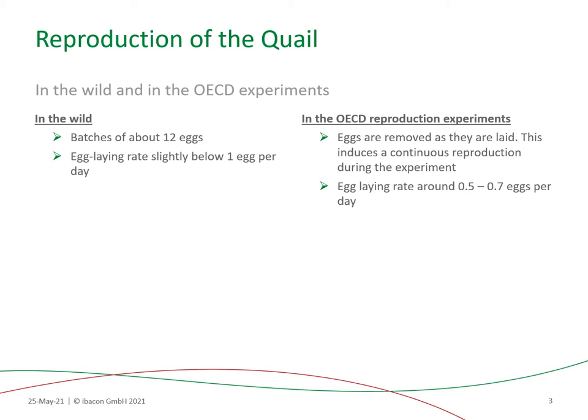In the wild, egg preparation and egg laying occurs as batches of about 12 eggs, at a rate slightly lower than one egg per day. In OECD experiments, however, the eggs are removed as they are laid, which induces a continuous egg laying until the end of the experiment. The rate of egg laying is a little bit slower, around 0.5 to 0.7 eggs per day.